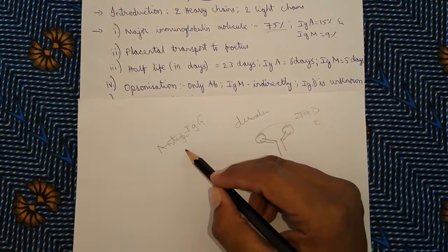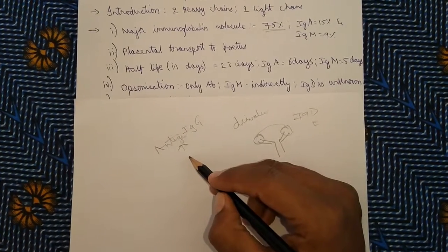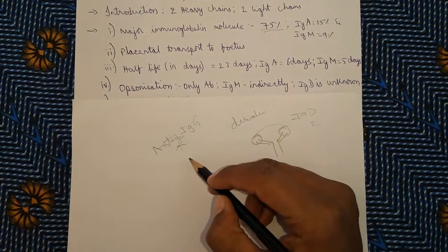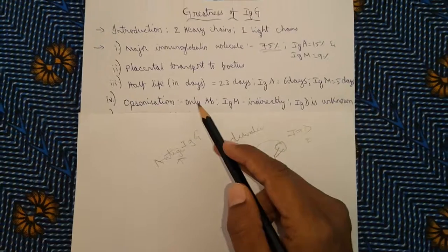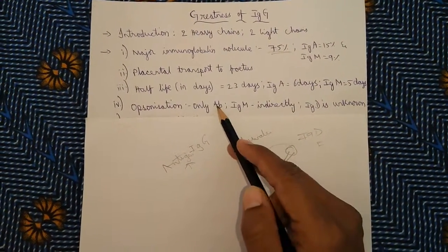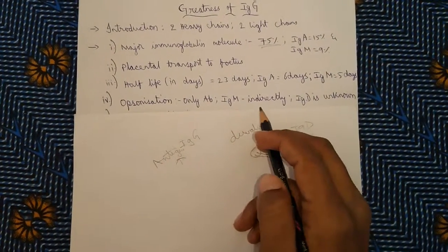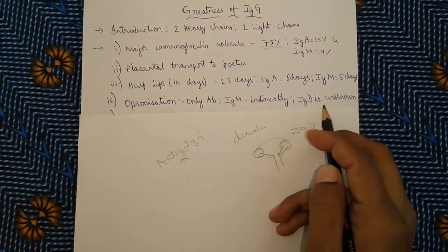Among all the immunoglobulins, only antibody G has the power of opsonization. IgM involves in opsonization process indirectly, and the role of IgD is unknown. So IgG has the most power of opsonizing and increasing the process of phagocytosis.